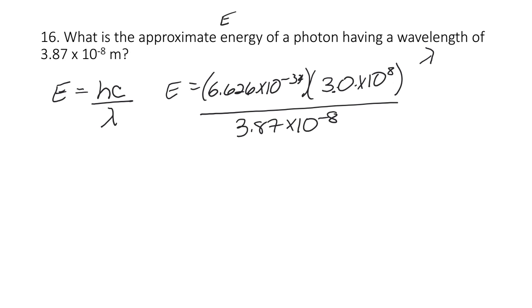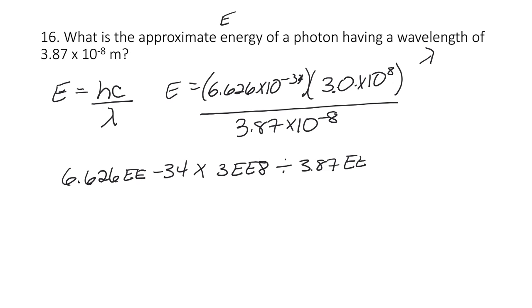So for the wavelength 3.87 × 10⁻⁸, in the calculator you do: 6.626 EE negative 34 times 3 EE 8 divided by 3.87 EE negative 8. When you do that, you get 5.14 × 10⁻¹⁸ joules.